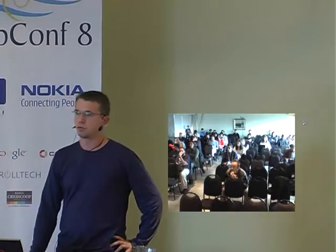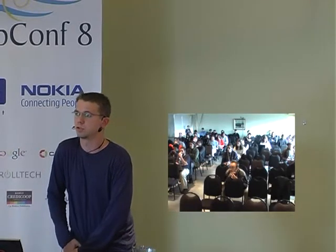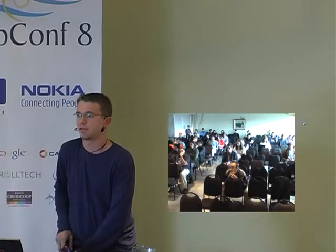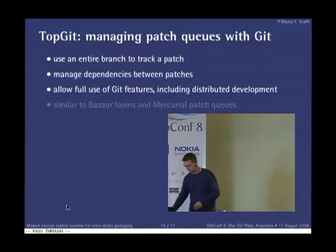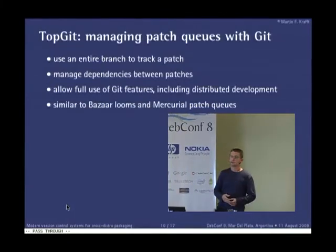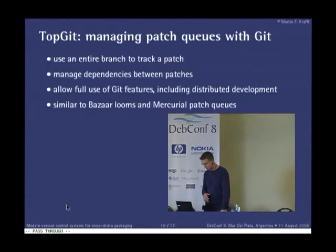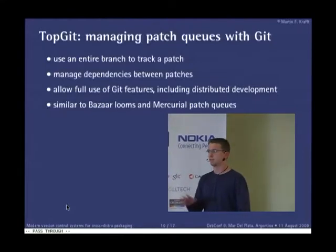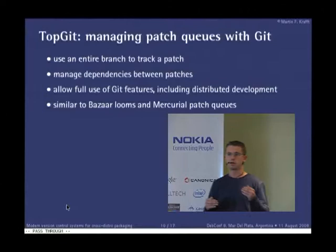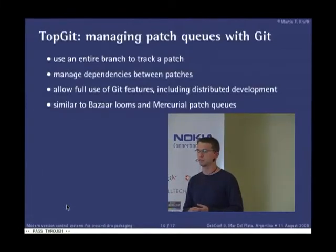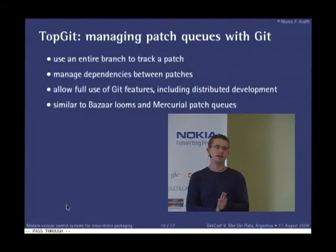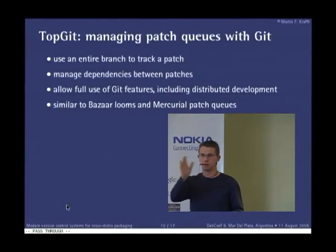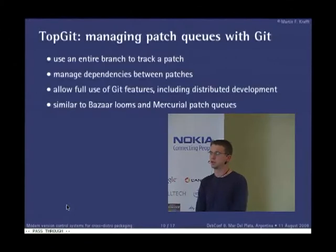This is not git-specific — as a matter of fact, git was the last to join this party. Bazaar has Looms and Mercurial has patch queues. Some may not have all the same features, but there is a strong trend to provide equivalent functionality. Bazaar and Mercurial tend to include good features found elsewhere. Git sort of looks forward only — whereas Bazaar and Mercurial work more like proper version control systems.